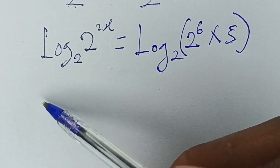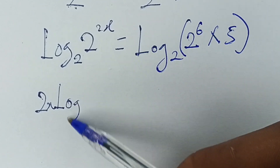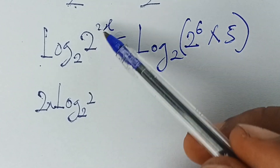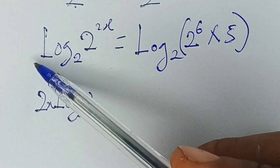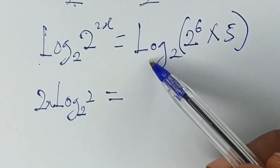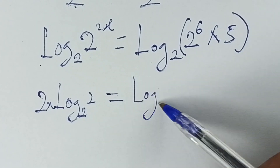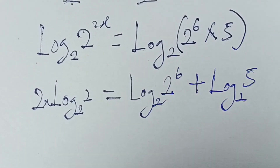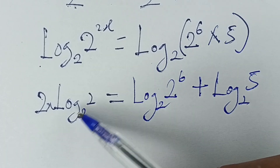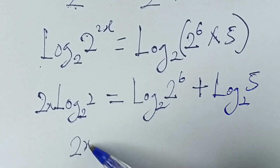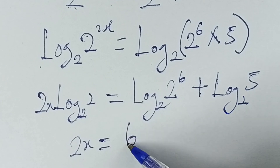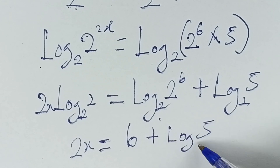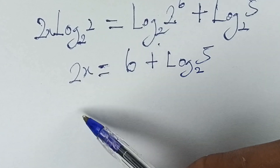Logarithm base 2 of 2 to the power 2x can be written as 2x multiplied by logarithm base 2 of 2, because when a number is raised to a power inside a log, you multiply the power by the log. On the right, since we have multiplication we add logs: logarithm base 2 of 2 to the power 6 plus logarithm base 2 of 5. The logarithm of any number in its own base is 1, so logarithm base 2 of 2 is 1. Thus we have 2x equal to 6 times 1 plus logarithm base 2 of 5, which is 6 plus logarithm base 2 of 5.